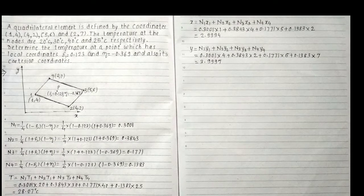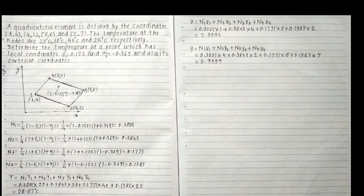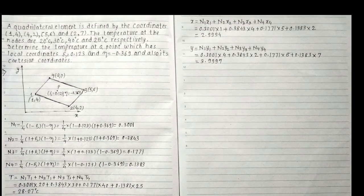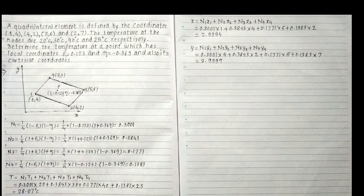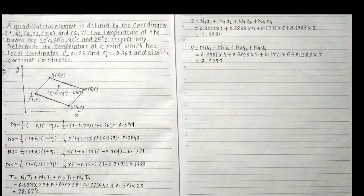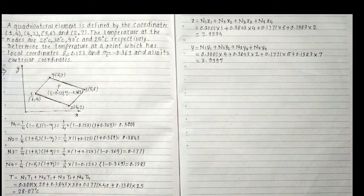Let's draw a diagram in a Cartesian coordinate system where we have node 1, node 2, node 3 and node 4 at points (1,4), (4,2), (5,6) and (2,7) respectively. We have one point P whose natural coordinates are given by zeta = 0.123 and eta = -0.369.